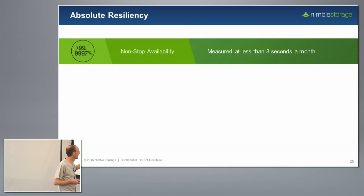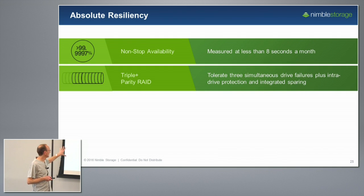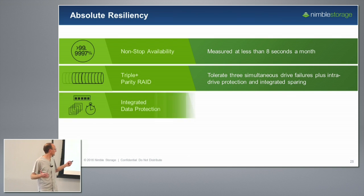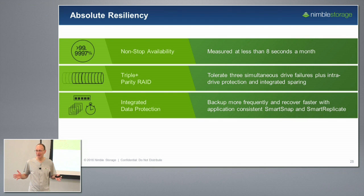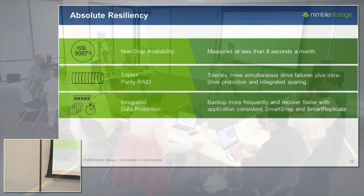It is application-consistent — we have all the frameworks in place for the major applications. On absolute resiliency: our measured availability across our entire install base is five nines and a seven. Triple-plus parity means we can survive three simultaneous disk failures plus sector failures on every other SSD, and still keep running without any loss of data or service. For integrated data protection, we offer application-consistent snapshots — thousands or tens of thousands — with replication, which we call SmartSnap and SmartReplicate. We also have integration with major backup vendors including Commvault, Symantec, and Veeam, who just announced support for our snapshots and replication in their frameworks.